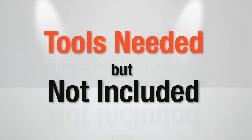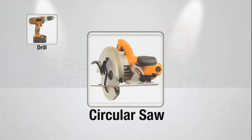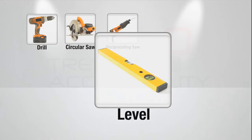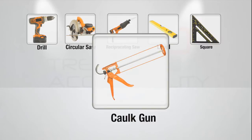And here are the tools you'll need, not included in the kit. A drill, a circular saw, a reciprocating saw, a level, a square, a caulk gun, a hammer.